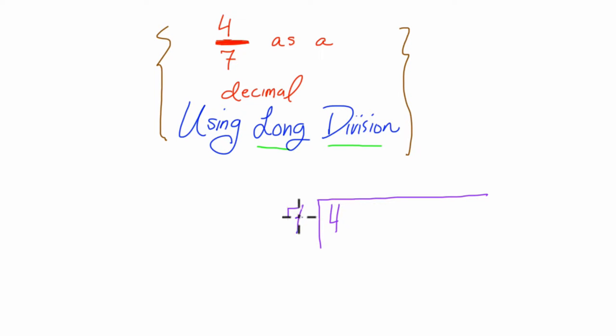Now here we would think of 7 going into really 40 to get started. And we're keeping that decimal point in place because really it's not going into 40, it's going into 4. So when we think of 7 going into 40 five times, it's really 0.5 here because 4 is 10 times smaller than 40.